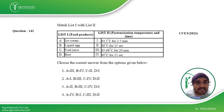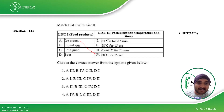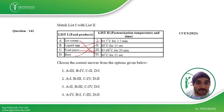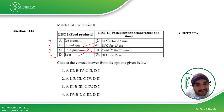Next, we have to match the pasteurization temperature of the following food products. Ice cream is pasteurized at 80°C for 15 seconds. Liquid egg is pasteurized at 64.5°C for 2.5 minutes. Fruit juice is pasteurized at 65–68°C for 20 minutes. Beer is pasteurized at 88°C for 15 seconds. The correct sequence is 4, 1, 3, 2 — so the fourth option is the right answer.